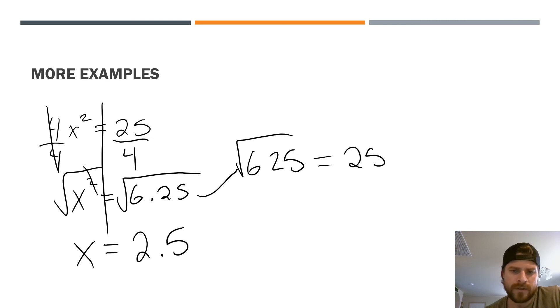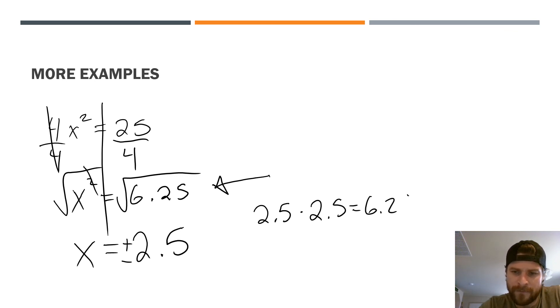So that's just me treating it differently so I don't have to use a calculator. But most of you are just going to type that right into the calculator. Calculator is going to give you this result. But it is important that you remember it is both a positive and a negative 2 and a half. Because 2.5 times 2.5 will equal 6.25. And so will negative 2 and a half times negative 2 and a half.